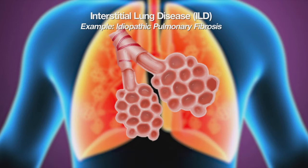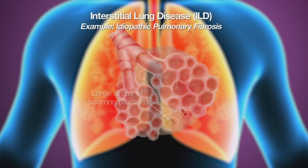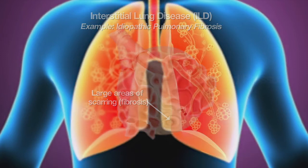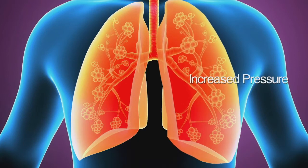Many connective tissue diseases lead to interstitial lung disease or fibrotic lung disease, which causes damage to the lung tissue and the lung blood vessels. With development of interstitial lung disease, the pressures in the lungs can rise and lead to pulmonary hypertension. This is one of the most common forms of pulmonary hypertension in the setting of connective tissue disease.